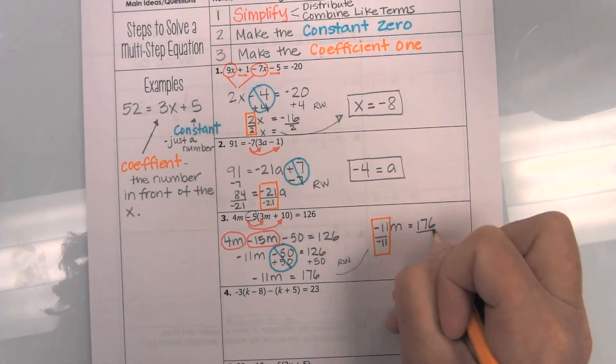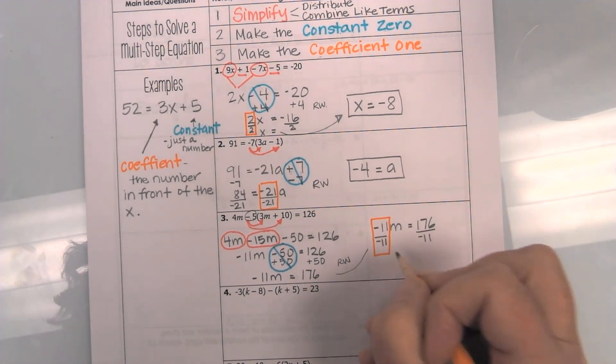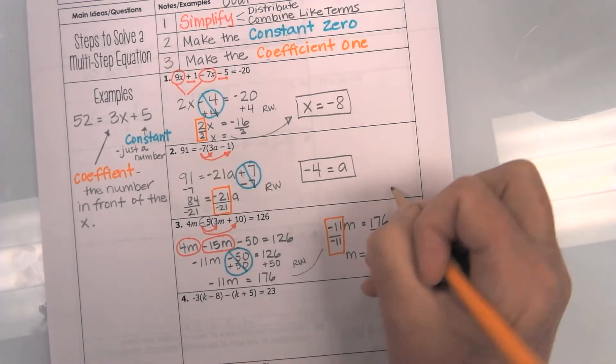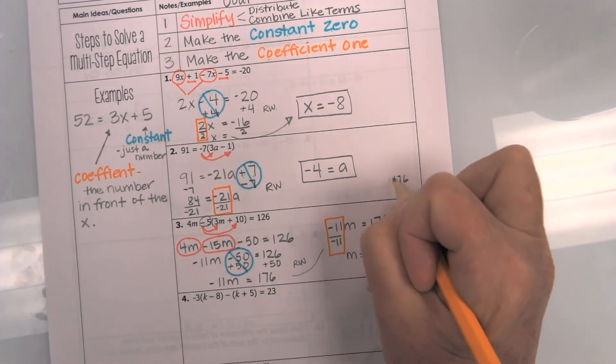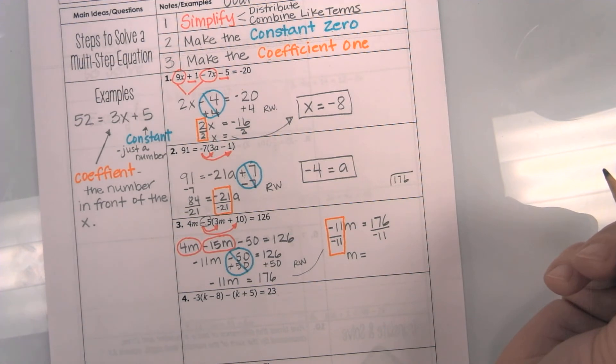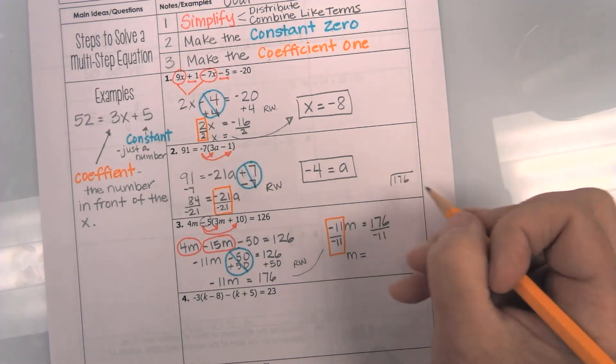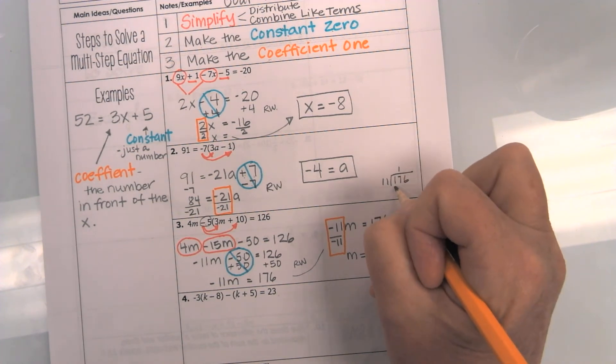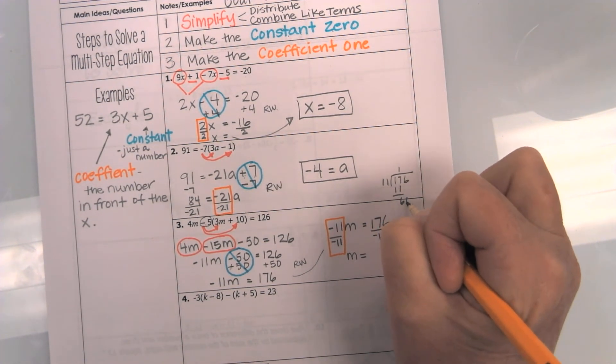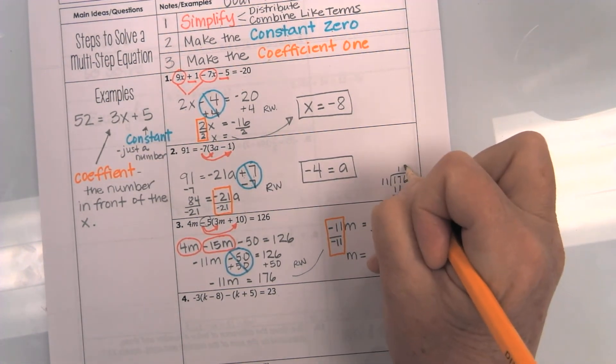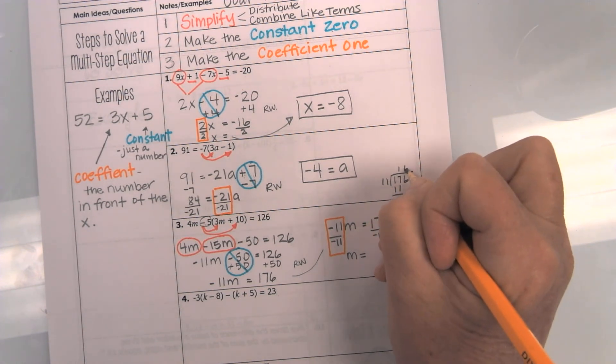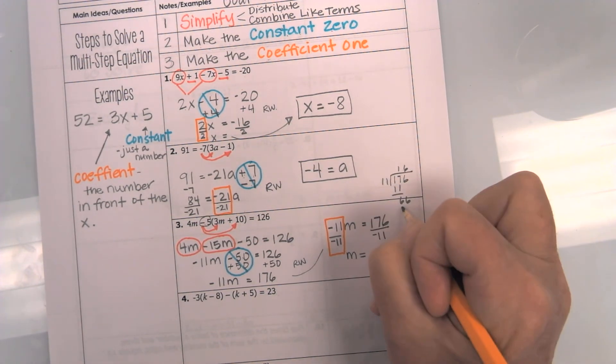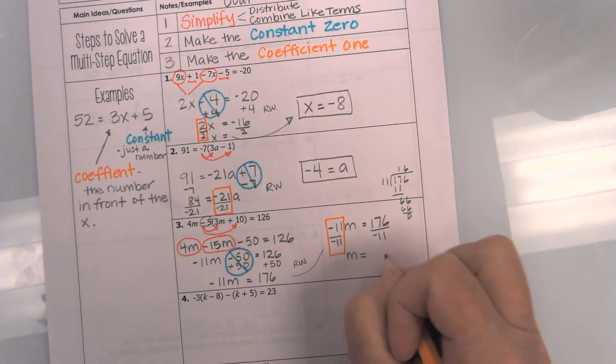And whatever I do to one side, I do to the other. And I get m equals, and you're catching me without my calculator, so I am going to have to actually do the division. So, you get to watch me do this. So, I have an 11 out here. 11 goes in one time. And then I am left with a 66. And 6 times 11 is 66. There we go. It is 16.